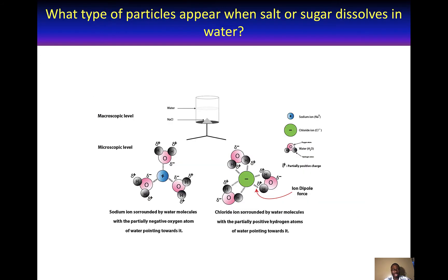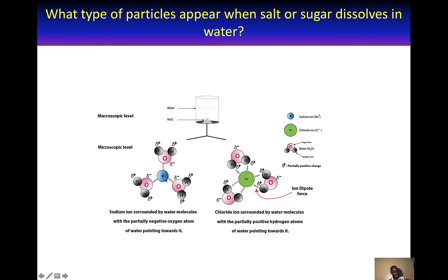How will the particle model look? At the microscopic level, because sodium chloride consists of sodium and chloride ions, the ions would be surrounded by water molecules. The blue circles represent sodium ions surrounded by water molecules, and the chloride ions are also surrounded by water molecules. These ions are free to move about in solution, and because they are free to move, they are able to carry electricity throughout the solution.